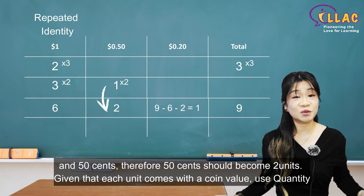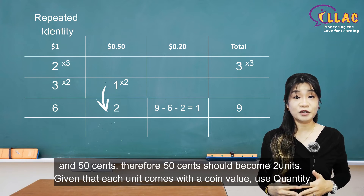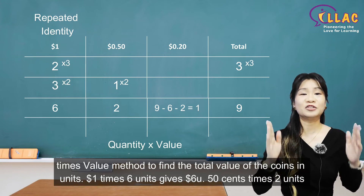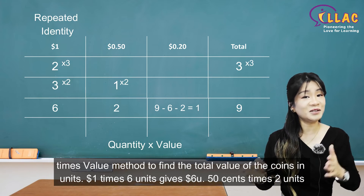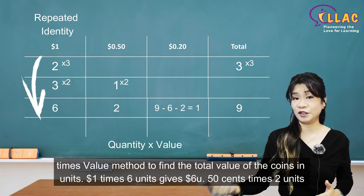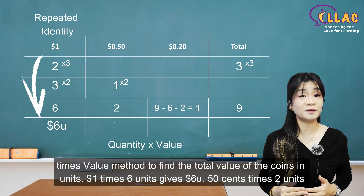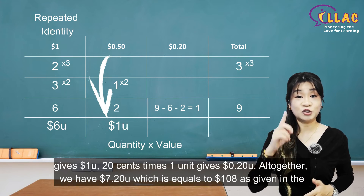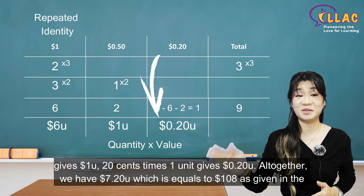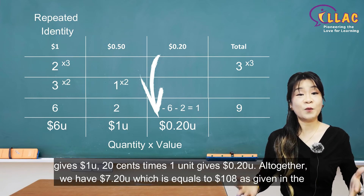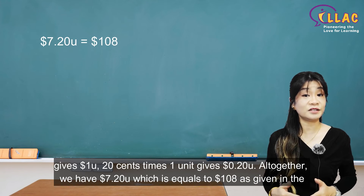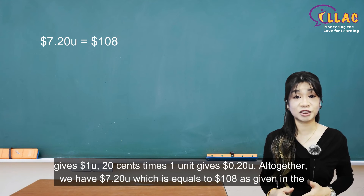Given that each unit comes with a coin value, use the quantity times value method to find the total value of the coins in units. $1 times 6 units gives $6 units. $0.50 times 2 units gives $1 unit. $0.20 times 1 unit gives $0.20 units. Altogether, we have $7.20 units, which equals $108 as given in the question.